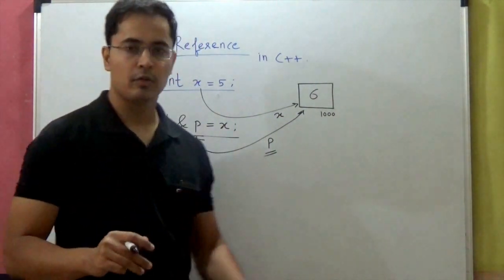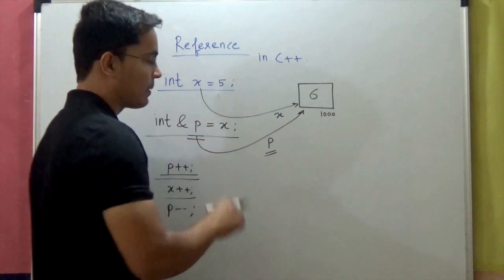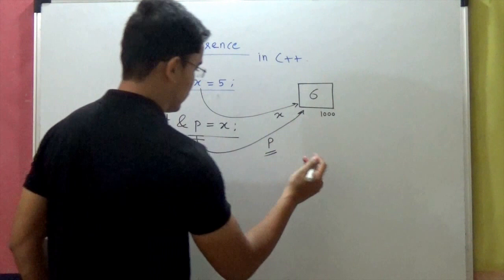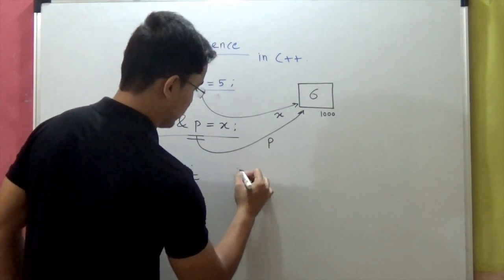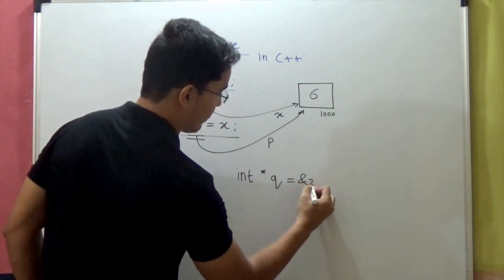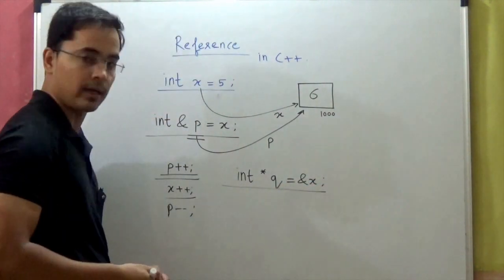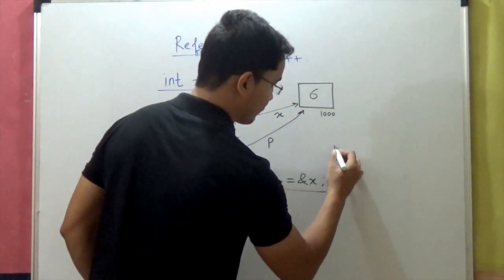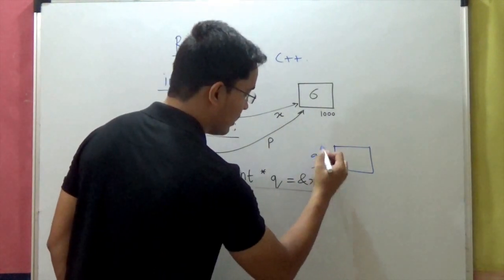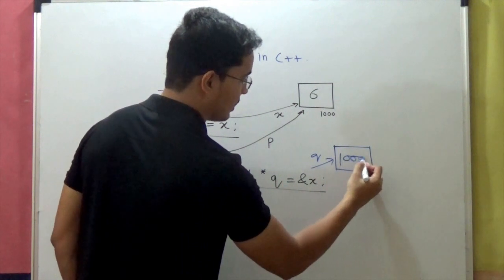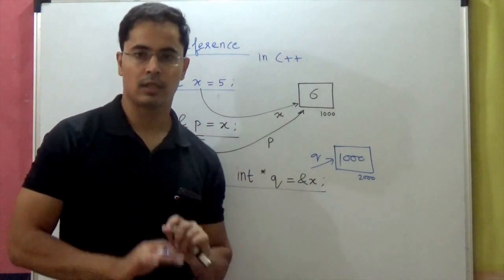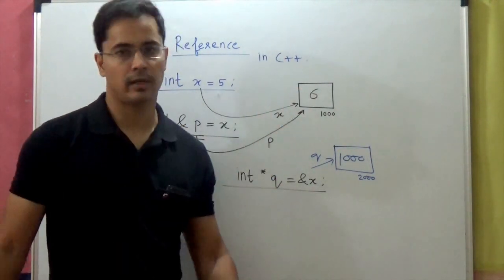The key point to note is that no separate memory location is created when you create a reference. Unlike pointers — if I create a pointer: integer star q equal to ampersand x — a memory location is selected for variable q, it stores the address of x which is 1000, and it has its own address, say 2000. But in the case of a reference, no memory location is created.